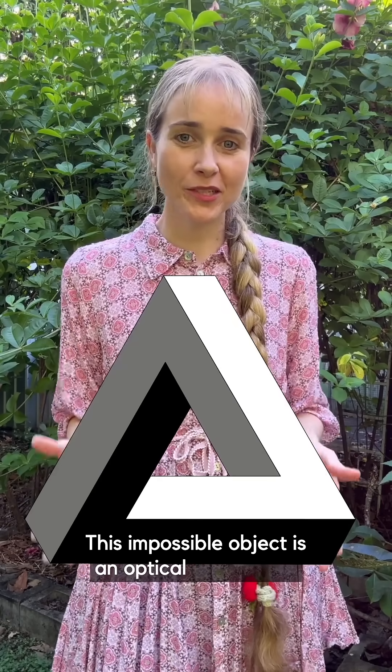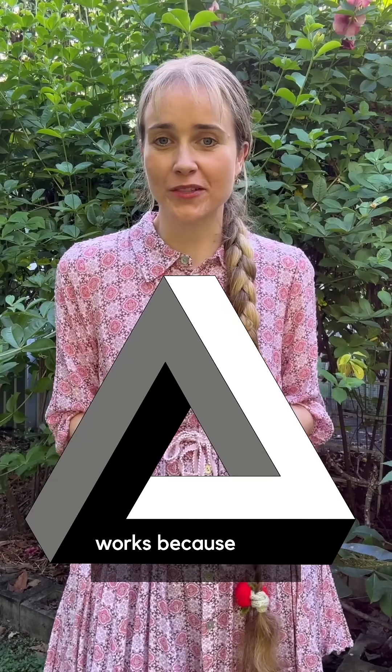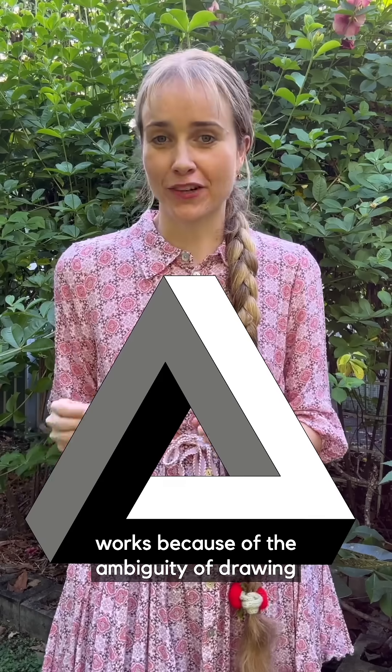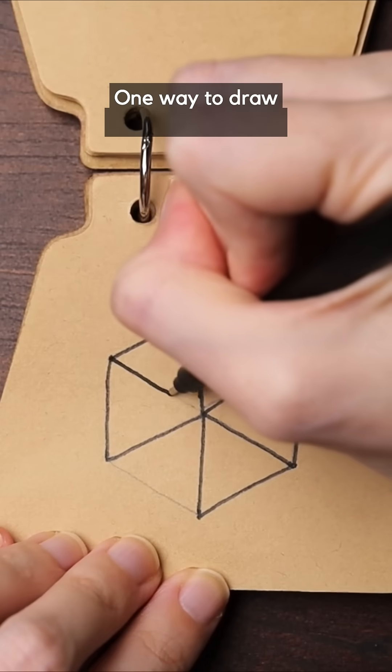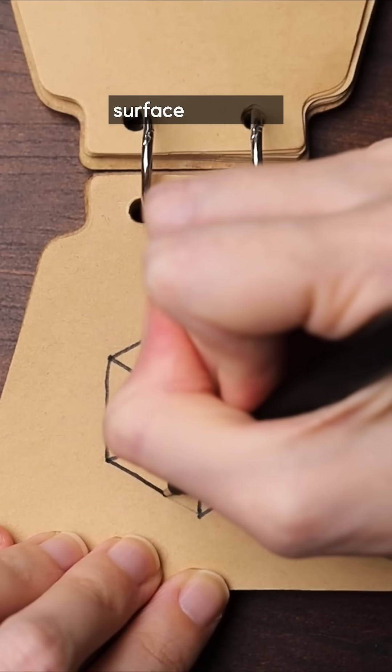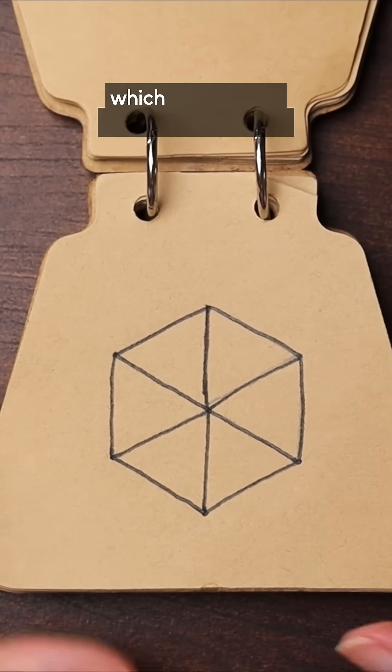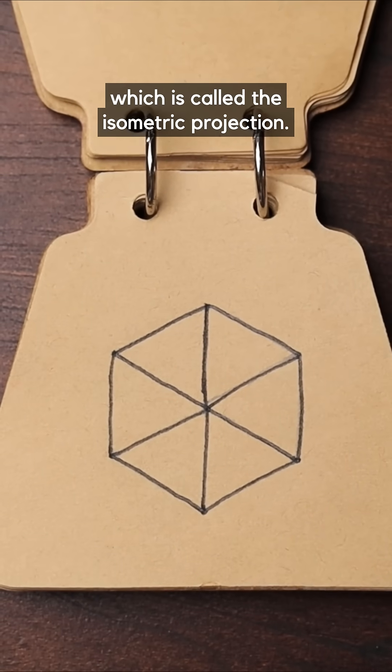This impossible object is an optical illusion that works because of the ambiguity of drawing 3D objects on 2D paper. One way to draw a 3D cube on a 2D surface is like this which is called the isometric projection.